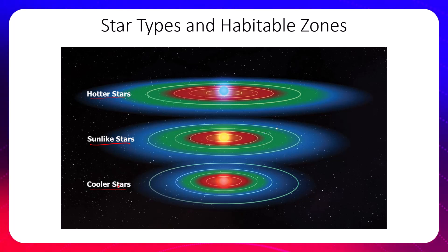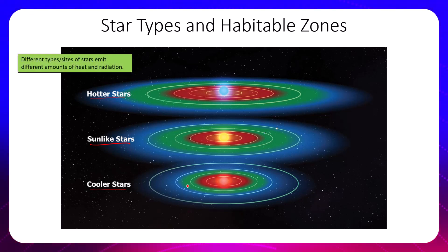And then you get into the cooler star range which means it's even going to shrink farther. Notice that as the temperature of the star decreases, so does the habitable area of that particular star as well.